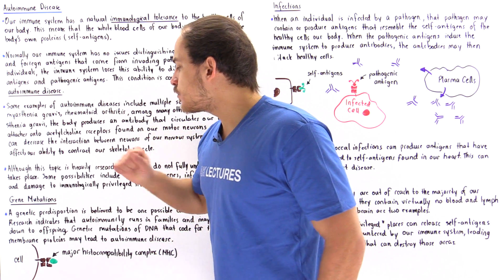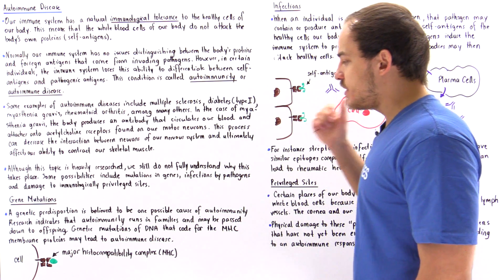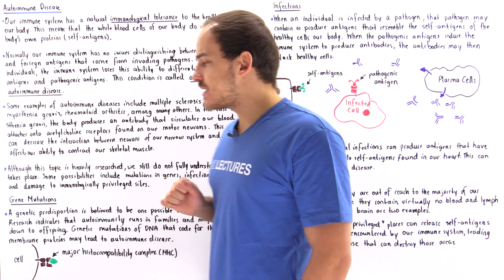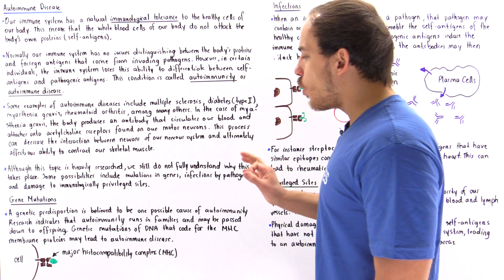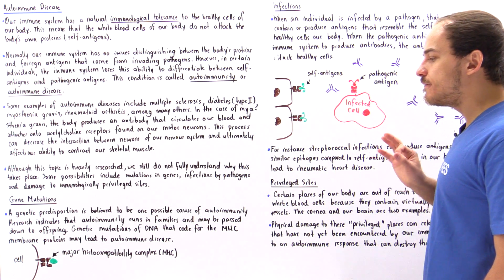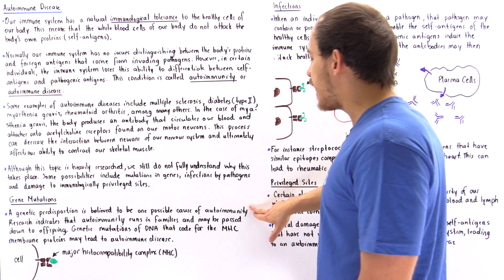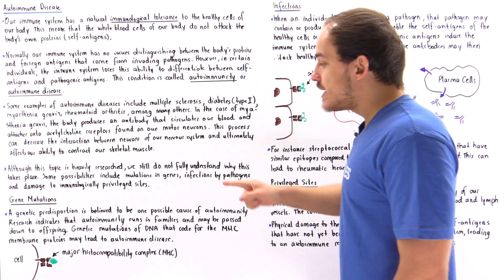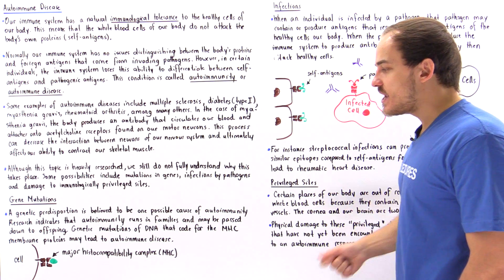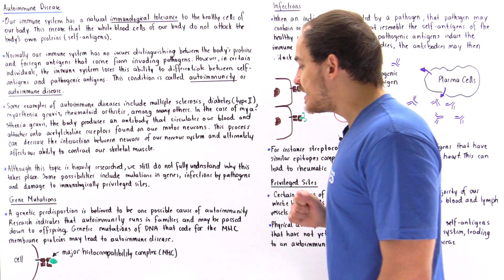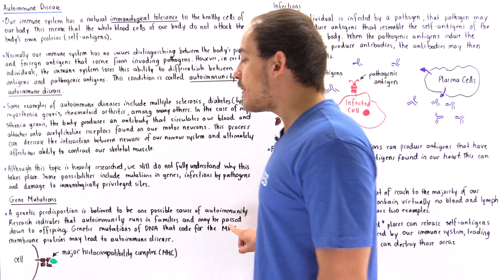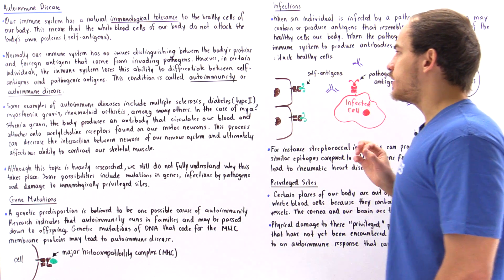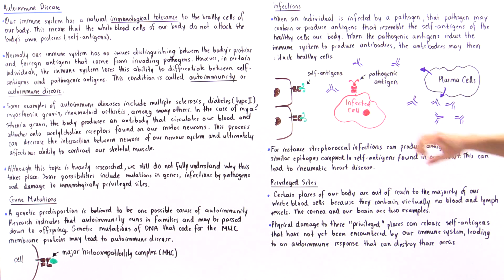A genetic predisposition is believed to be one possible cause of autoimmunity. Research indicates that autoimmunity runs in the family and may be passed down to offspring from parent. Genetic mutations in the DNA that codes for MHC membrane proteins may lead to autoimmunity.